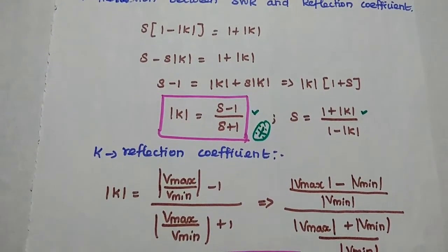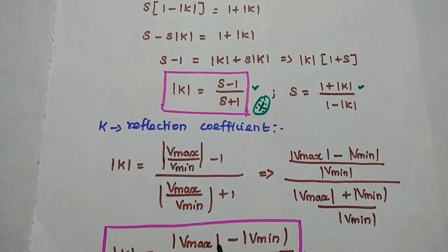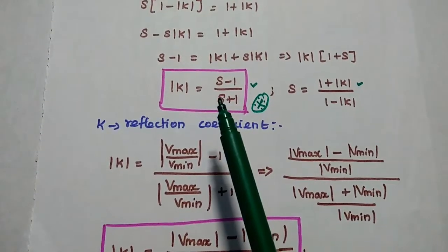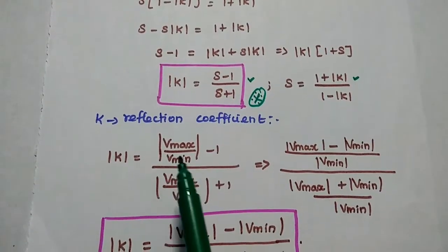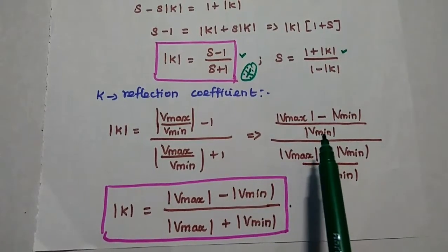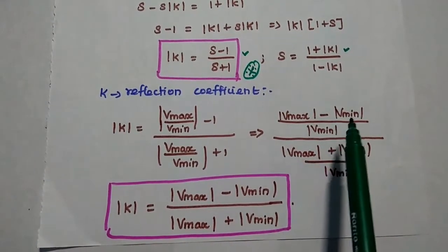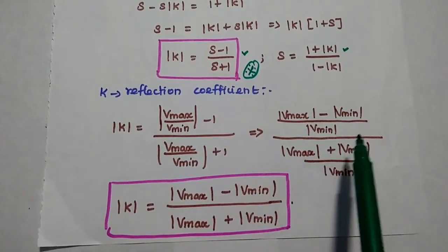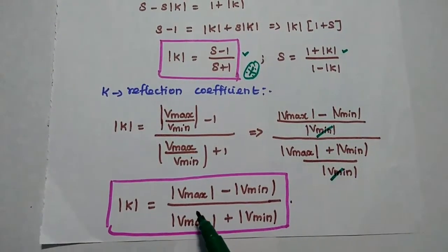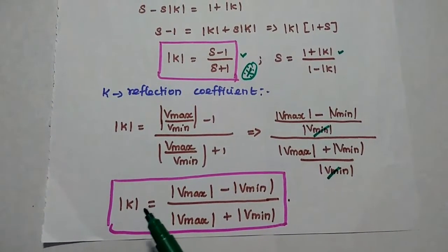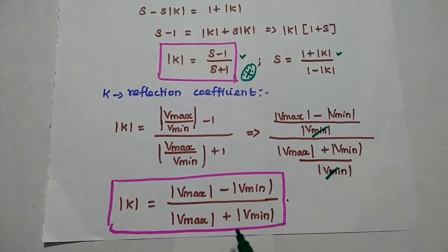Next, we can express the reflection coefficient in terms of maximum and minimum voltage. Using the formula S equals Vmax by Vmin, we replace S in the expression for K. Taking Vmin as the common factor in the numerator and denominator, the numerator becomes Vmax minus Vmin divided by Vmin, and the denominator becomes Vmax plus Vmin divided by Vmin. Dividing these two, we finally get modulus of K equal to Vmax minus Vmin divided by Vmax plus Vmin.